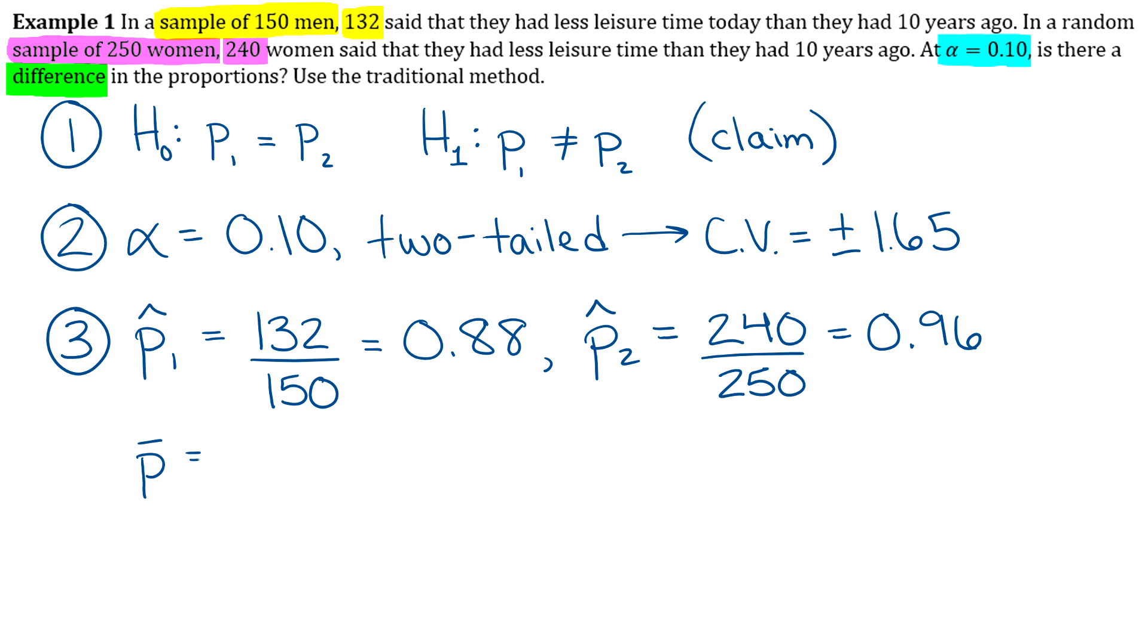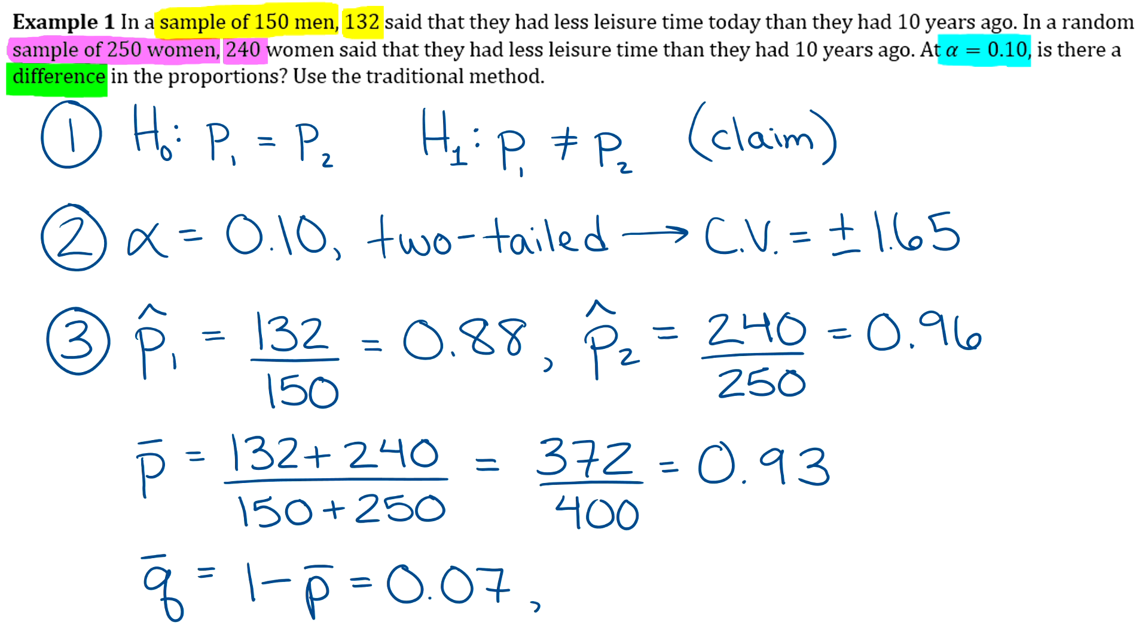Now P bar is like a combination of the two. You're going to add the two numerators and then add the two denominators. So 132 plus 240 in your numerator, and on bottom, you're going to add 150 plus 250. That's 372 over 400, which comes out to be 0.93. And then we also need Q bar, which is 1 minus P bar, so 1 minus 0.93 is 0.07.